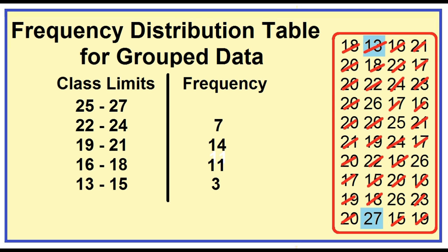How about 25, 26, 27? 26, 27, 25, 26, 26, 26, 25, 26, 26 — the frequency for the class 25 to 27 is 5. Then add the frequency of each class: 5 plus 7 plus 14 plus 11 plus 3 is equal to 40. The total frequency represents the number of women included in the sample.